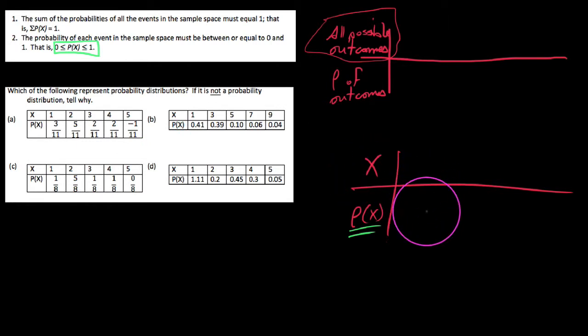So one property I want to recognize is up here on the left. We say, it's actually the second of the two properties. It says the probability of each event in the sample space must be between or equal to 0 and 1. That is, the probabilities between 0 and 1 or equal to them. So basically what this means is, for all the probabilities that we list down here, we would never list anything that was bigger than 100%, for instance. So if I had 1.50, that would be ridiculous because that would be 150%.